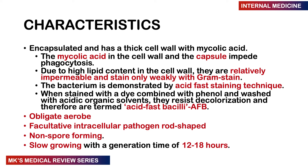Macrophages and neutrophils that are supposed to phagocytose these organisms are not effective because of the mycolic acid and the capsule. This allows TB to survive within macrophages and actually start multiplying. If your immune system is not strong enough — for example in children, the elderly, or the immunocompromised — they may present with active disease. The cell wall has a high lipid component, making it relatively impermeable.